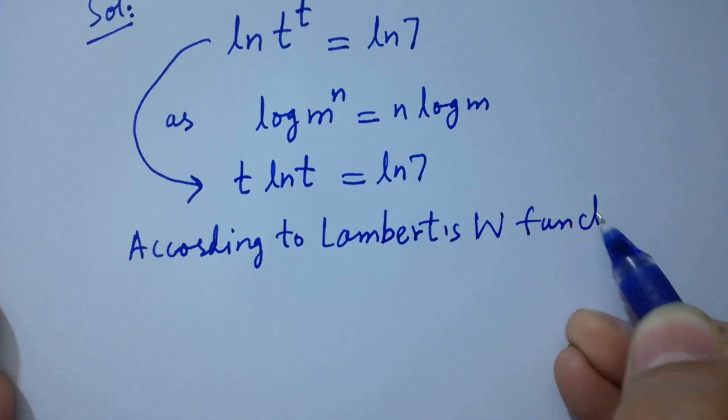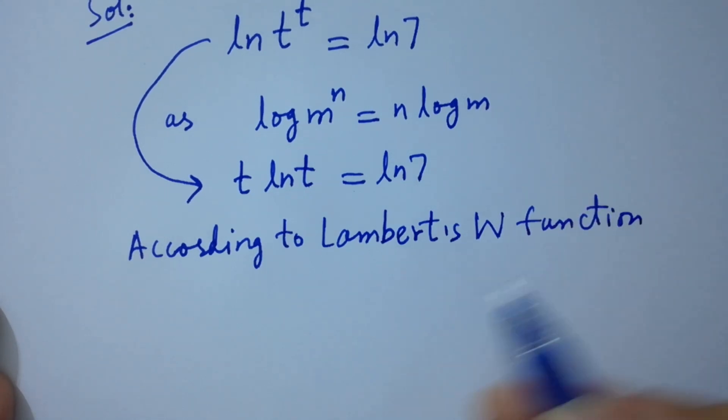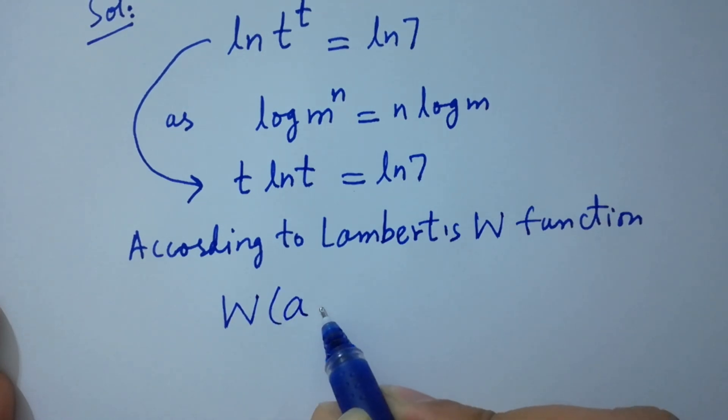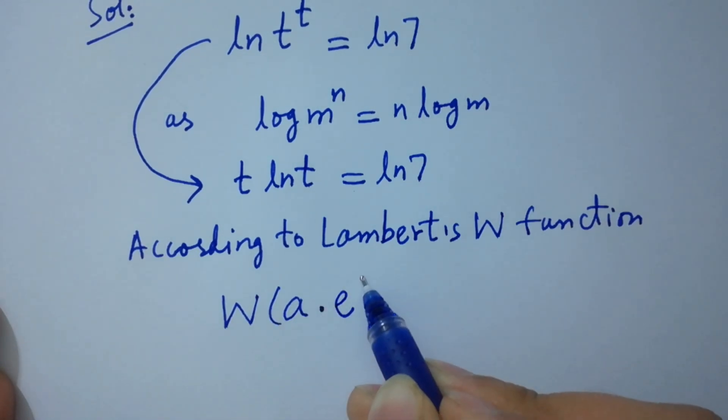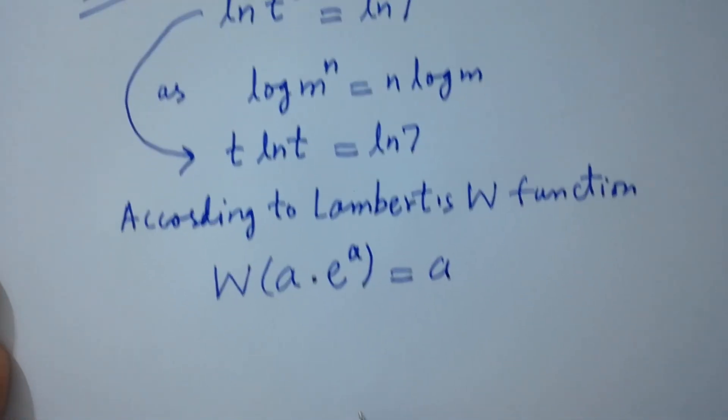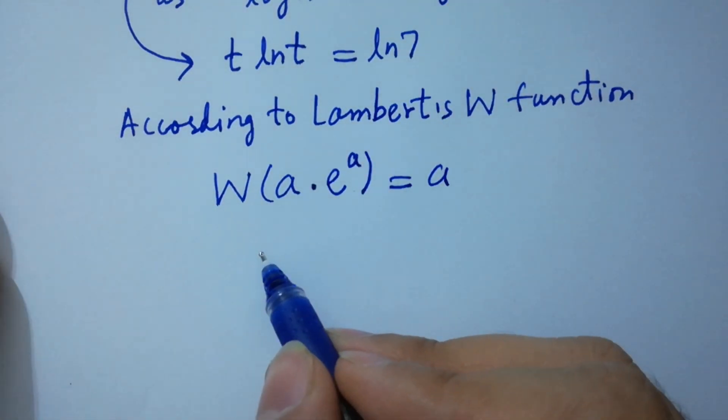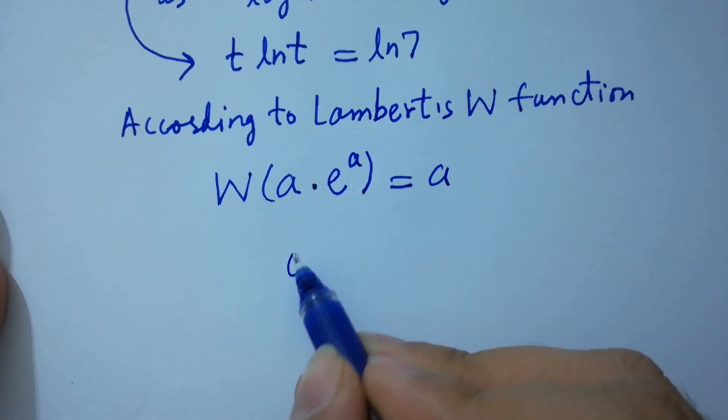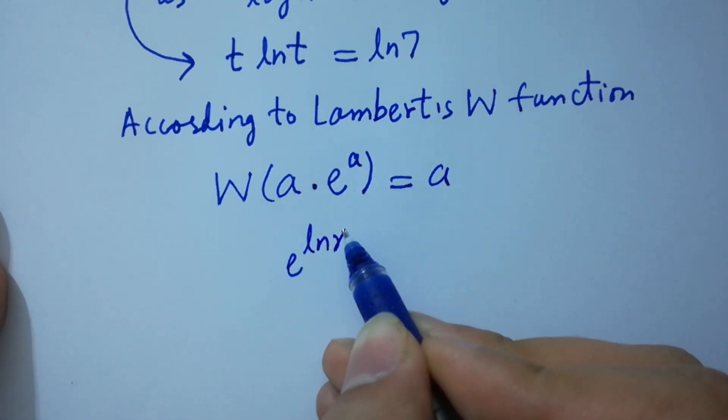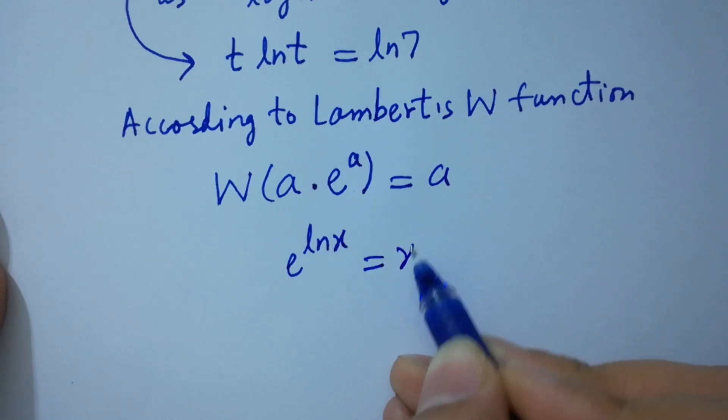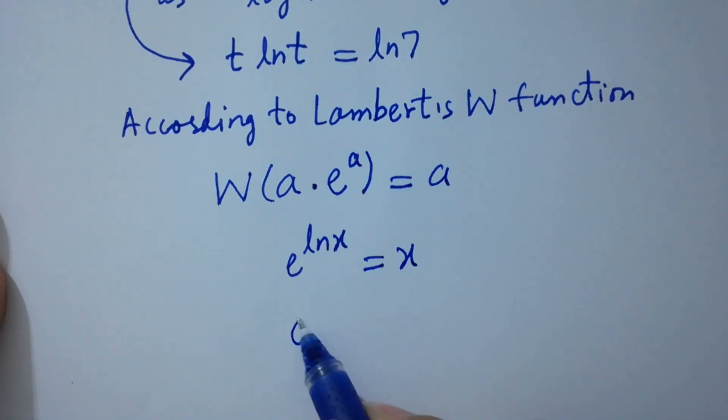W(a times e to the power a) equals a. And since e to the power ln x equals x, then e to the power ln t equals t.